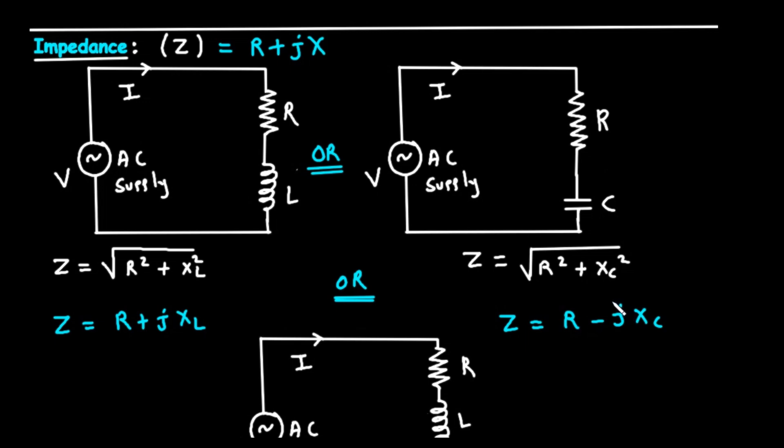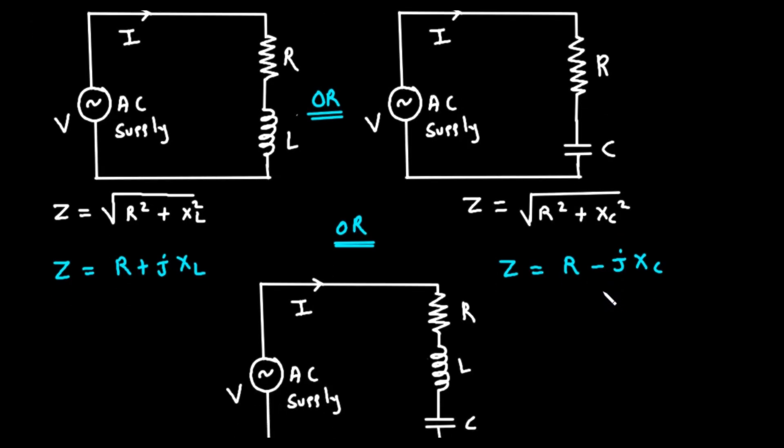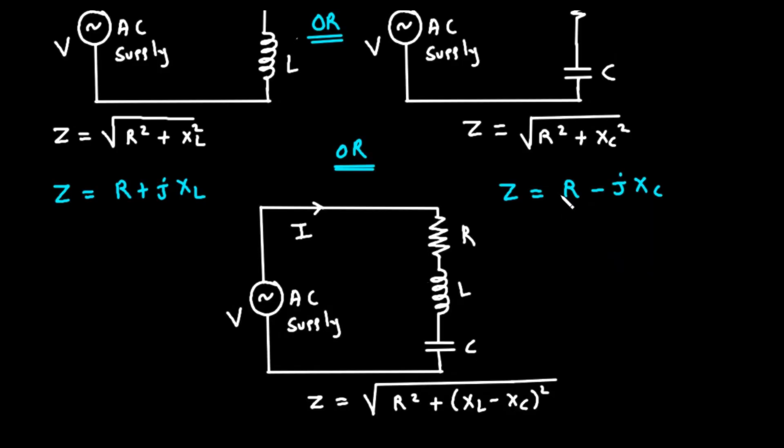To find the magnitude of the impedance for this circuit, we again use the Pythagorean theorem. The magnitude of Z is equal to the square root of R squared plus X sub C squared.